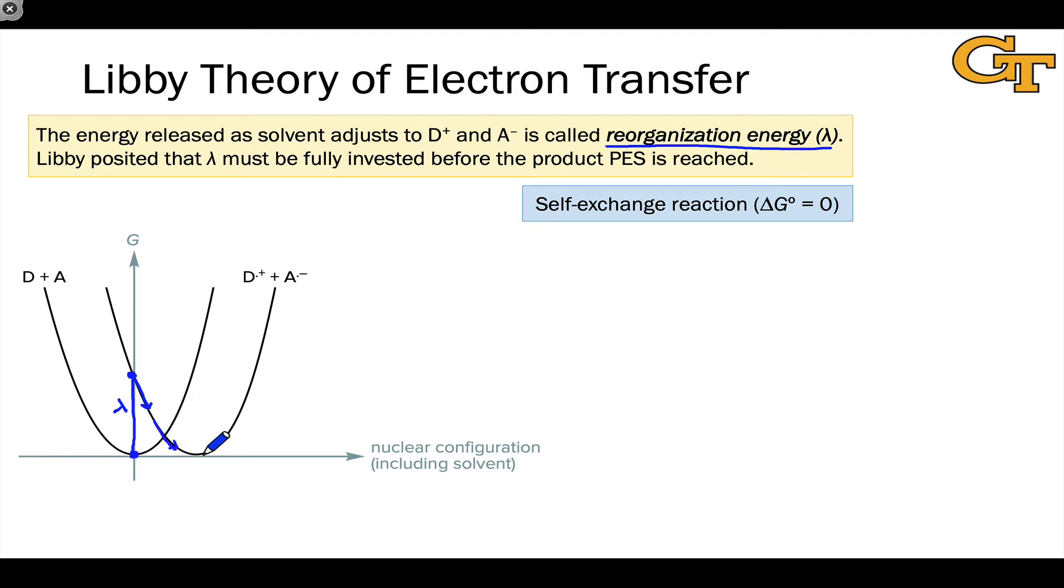The way the representative point moves, according to Libby theory, is first directly up to the D dot plus A dot minus potential energy surface, complete investment of that solvent reorganization energy, followed by relaxation down to the equilibrium state of D dot plus and A dot minus.